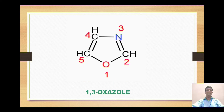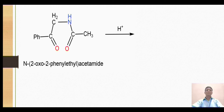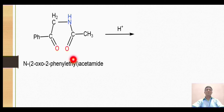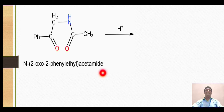The first synthesis is the Robinson-Gabriel synthesis. The starting material is an acetamide derivative: CH3CONH, meaning it is an amide. There is also a ketone, but by priority order, amide takes precedence. On the nitrogen of the amide we have a two-carbon chain (ethyl), and on the second carbon we have phenyl and oxo groups, so it is called 2-oxo-2-phenylethyl acetamide.